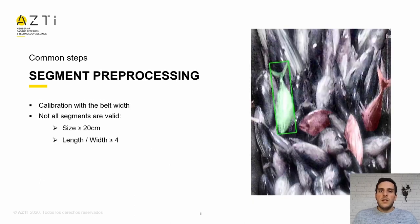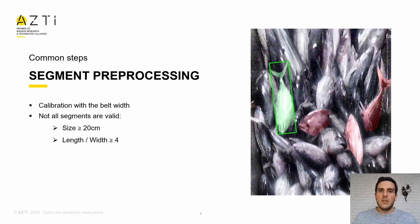For the segment preprocessing, we use the width of the belt as a calibrating method. Knowing each size in meters and pixels allows us to calculate the size of an individual. Due to the nature of the images, the fish may appear overlapped, so not all of them are suitable for measurement. The parameters we have used to consider an individual as valid are: a minimum size of 20 cm, and the length of the fish must be at minimum 4 times its width. By doing so, we avoid a large number of segments that are not useful.